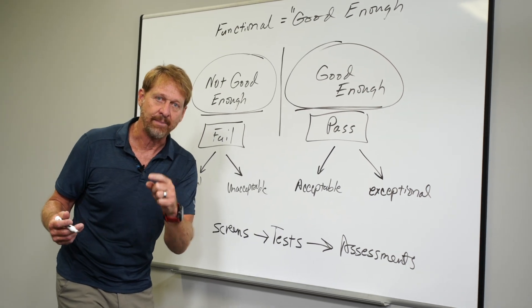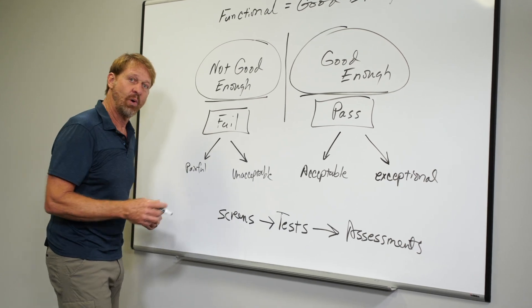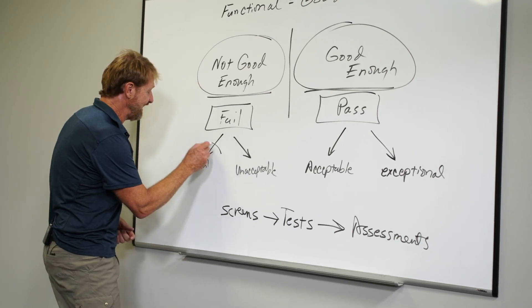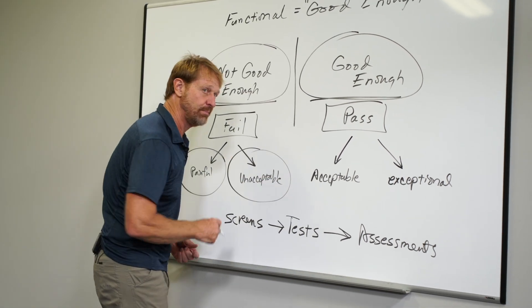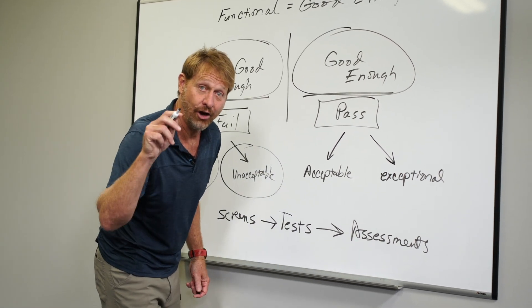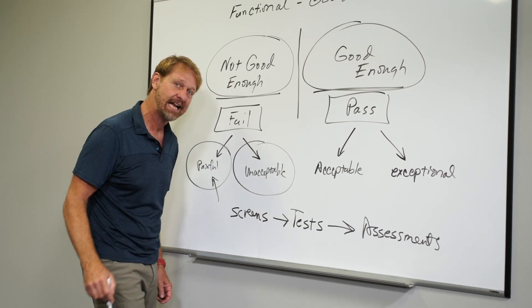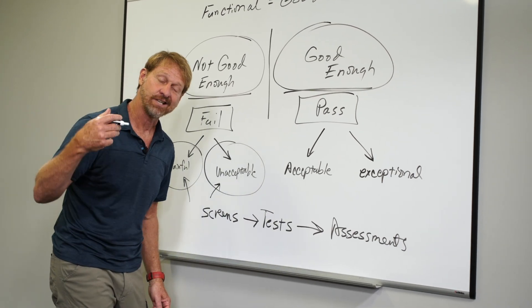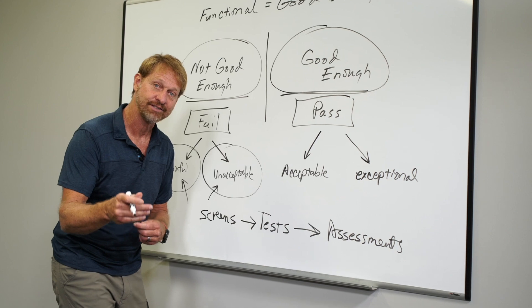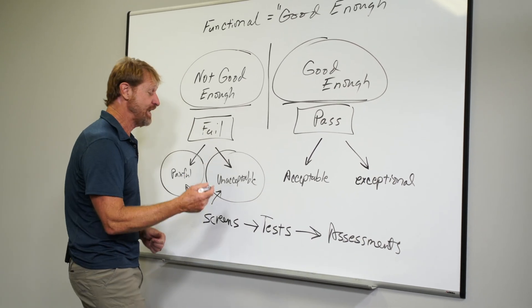But science doesn't stop there. That's all we do for the client. But there's two ways to fail a movement screen. The movement can be painful or it can just be unacceptable. Too tight, too weak, off balance. Those are two different things because I don't necessarily know that this person needs exercises just yet. But we already know if you don't have pain, some of the things that'll budge your movement patterns. And we also know which movement pattern to start first with, believe it or not.